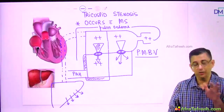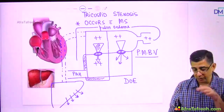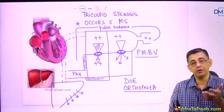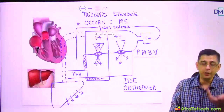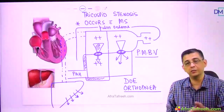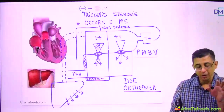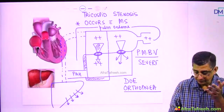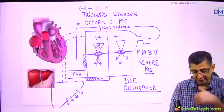When patients present with a combination of MS and TS, symptoms of MS predominate initially. Most patients have dyspnea on exertion and orthopnea, so clinicians focus on the pulmonary edema component, diagnose mitral stenosis, and treat it aggressively with percutaneous mitral balloon valvotomy. Tricuspid stenosis may not be picked up because it may not be severe initially, or the right side was neglected during workup. After PMBV, pulmonary congestion resolves but right-sided heart failure features develop.